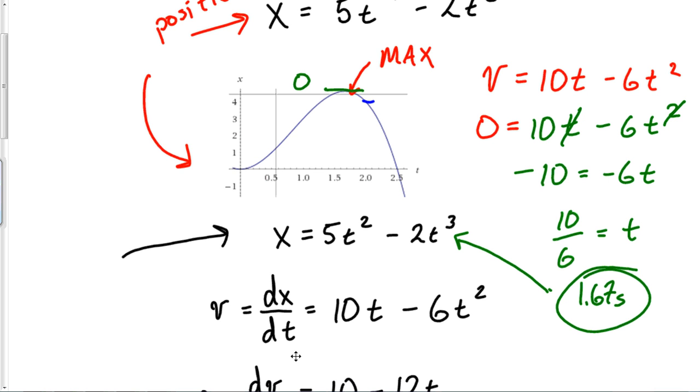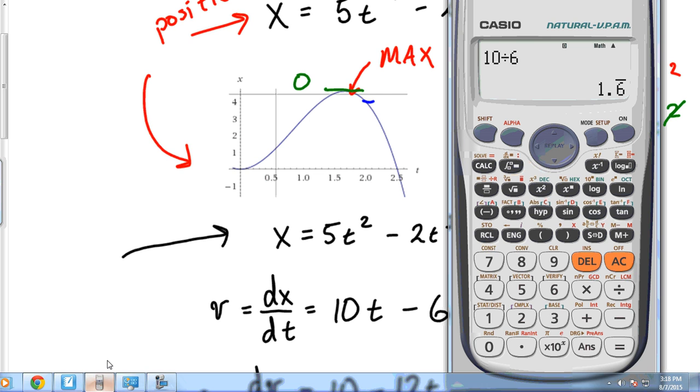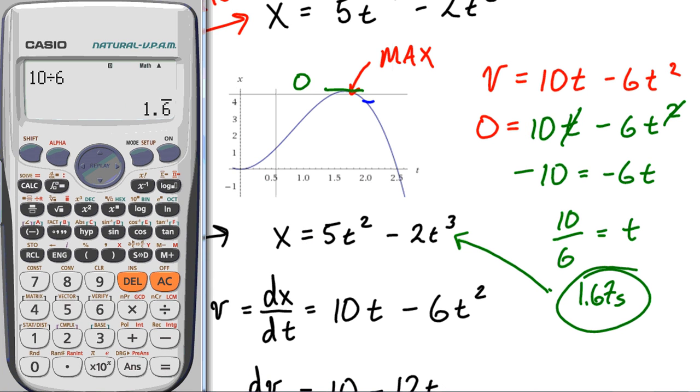Now you should be saying okay, what is the maximum value? All we got to do is plug back in 1.67 for that time. So let's plug that in to the calculator: 5 times 1.67² minus 2 times 1.67³. That means at a time of 1.67 seconds, a maximum displacement or position of 4.62 meters has occurred. And that's how you determine your maximum.